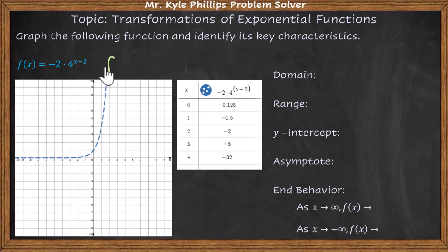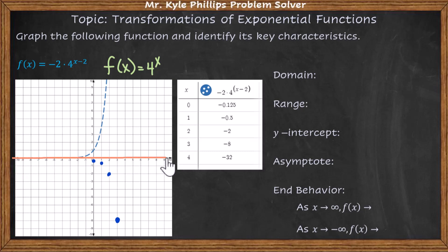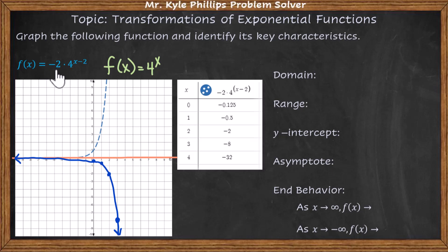Last example. Our parent function is going to be 4 to the x. Here we have this transformation — we're working with a negative coefficient. Let's notice what that does to the graph. At zero, we're at negative 0.1, so incredibly close to zero. At one, we're at negative one half. At two, we're at negative two. At three, we're at negative eight. There is no plus k, so I have a horizontal asymptote at zero, just like my parent function. My exponential function is going down and getting infinitely close to zero. The negative made it flip — it gave us a reflection over the x-axis.